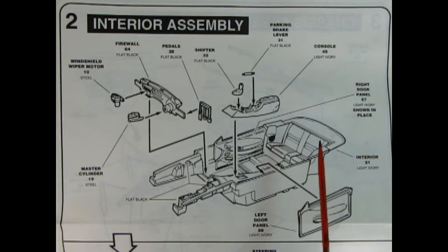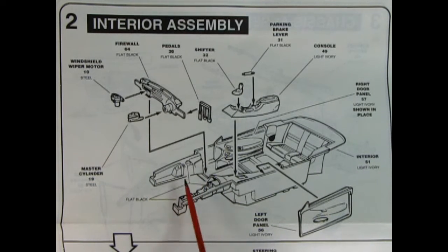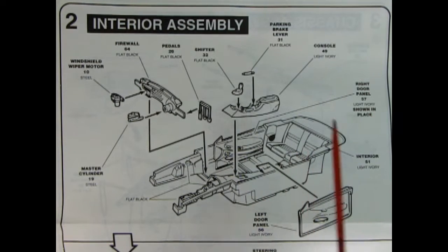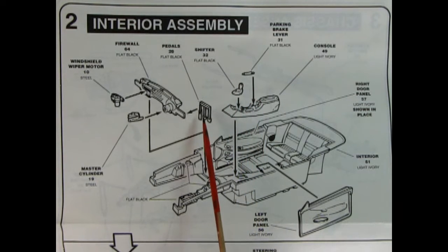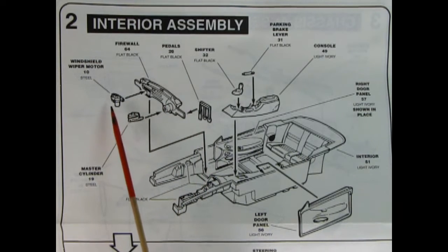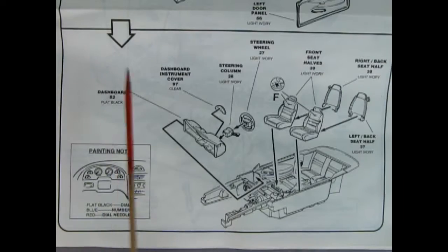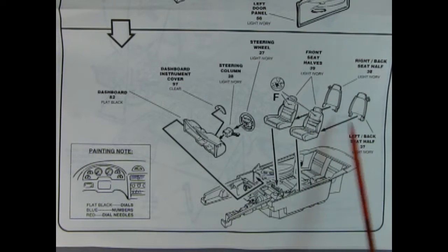Panel two shows our interior assembly. Here we have that tub again with the back seat molded in place and the drop-in door panels left and right. We also have some of the under hood area molded into the bucket. Then we've got our center console, we've got our parking brake lever, our shifter, and the pedals which I'll glue in place. Then we've got our firewall, windshield wiper motor, and the master cylinder. And moving down here we have the right and left hand seats with seat backs. And again they have that seat belt guide molded in place up top. And then we've got our steering wheel, our steering column, the dashboard instrument cover, and our dashboard. And then a painting note down here. Now on the radio in here you can listen to Wigfield singing Saturday night.